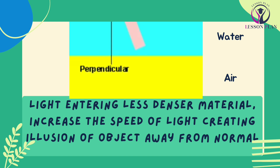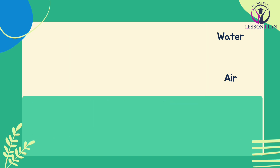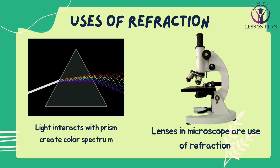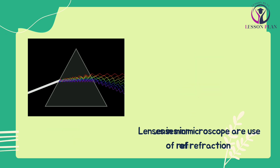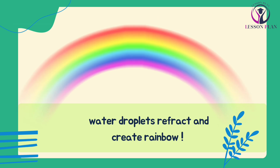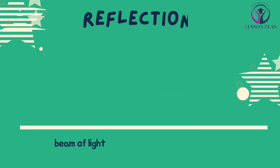Refraction is what allows us to see objects through lenses such as eyeglasses or microscopes, and it also creates the beautiful patterns we see when light passes through prisms. Refraction can also be observed in a fascinating rainbow, where water droplets refract light and create its colours.